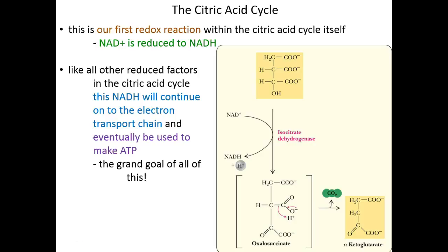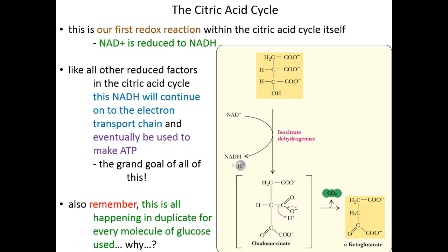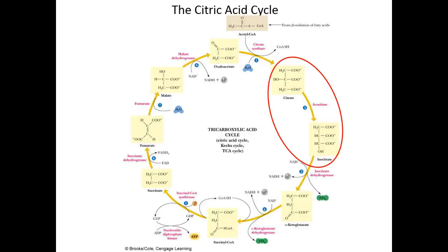The grand goal of everything we're doing is to eventually make ATP by the bucket full. We are actually doing two of these steps for every molecule of glucose we consume. For every one molecule of glucose consumed, we made two pyruvates, which allowed us to make two acetyl-CoAs, which fed into two citric acid cycles in parallel — making two citrates, isomerized into two isocitrates, and then decarboxylated into two alpha-ketoglutarates. Everything from the moment of the isomerization in glycolysis onward, we are doing in parallel for every one glucose molecule consumed. It's important to keep that in the back of your mind.